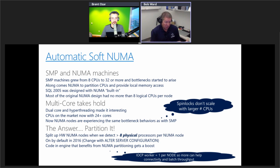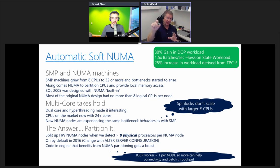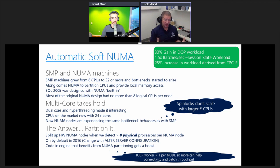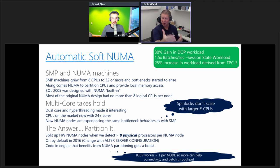Any code in the engine that benefits from NUMA partitioning gets a boost. For example, the IO completion port worker — a dedicated thread handling TDS packets coming into SQL Server — is built one per node by default. By adding more logical NUMA nodes, we get more of these workers and directly get a boost in connectivity and batch throughput. The performance results are notable: on a workload derived from our TPC benchmarks, we saw a 25% increase just by turning on auto-soft NUMA partitioning. It's on by default, with an ALTER SERVER CONFIGURATION parameter to turn it off if needed.